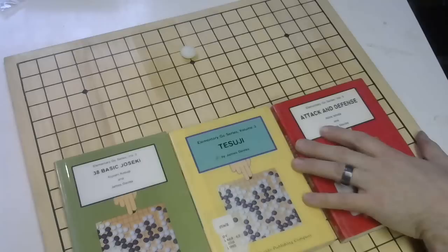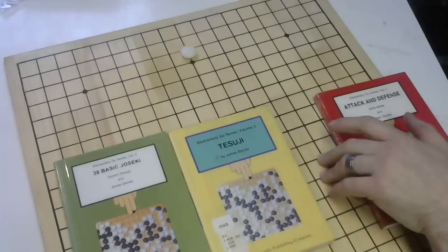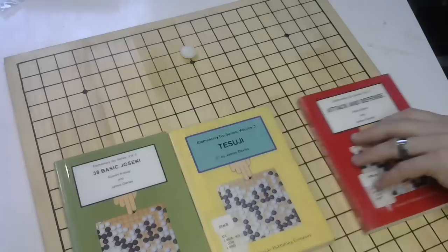So actually, let's see, one, two, three. Okay, so this would be Endgame, Master Tesuji, Attack and Defense, and then Handicap Go, and Opening would be four. So there are five of these. I got my hands on three of these.